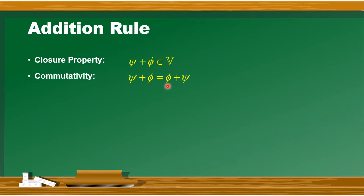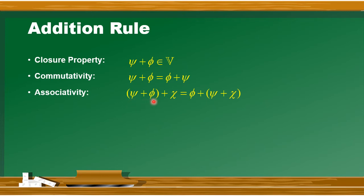इसी तरह एक और property है associativity. आपके पास अगर तीन vectors हैं और उनको add करना चाहते हैं तो उनको add करने के दो method होंगे - आप पहले vector को दूसरे vector के साथ associate कर देते हैं और जो result आए उसको third vector में add करते हैं, या दूसरे vector को तीसरे के साथ associate करके उसको first vector में add करें. तो left और right side के results में कोई effect नहीं होगा - इसको associative property का नाम दिया जाता है.